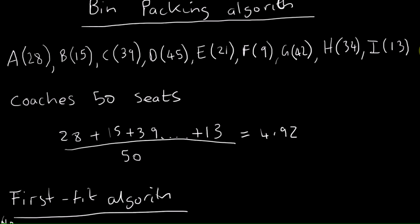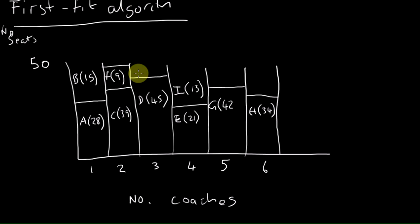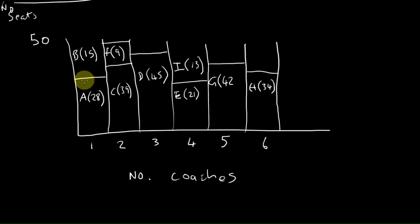So we've needed, using the first-fit algorithm, we've needed six coaches. And if you were to add these up and find how many seats you'd have left, let's go for 28 plus 15, so you've got 7 seats left in that coach, you've got 2 seats left in that coach, 5 in that coach, that was 34 so you've got 16 left in that coach, and you've got 8 left in that coach and you've got 16 left in that coach. So you've got 7, 9, 14, 30, 38, 48 plus 6, 54 seats. So you've got 54 seats left.